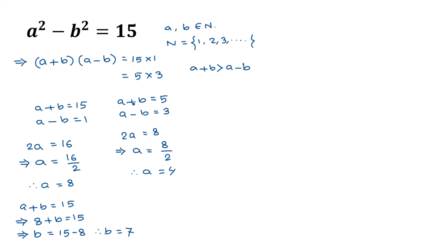Substituting a = 4 into a + b = 5 gives 4 + b = 5. Taking 4 to the right side, b = 5 − 4 = 1. So for this second case, b = 1.